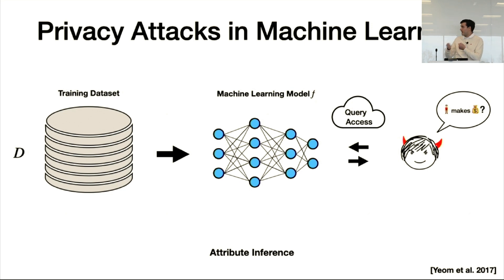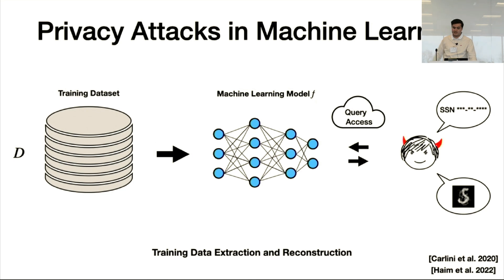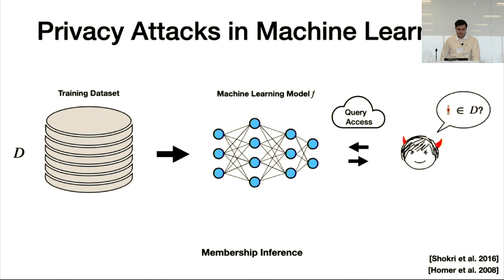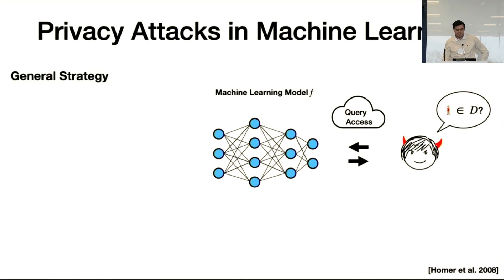There's tons of prior work in this area. One example is attribute inference attacks, where the adversary is given an incomplete feature vector and uses query access to complete the missing features. Another example is training data extraction or reconstruction attacks, where the adversary uses query access and additional knowledge to reconstruct training data samples. We'll be talking about membership inference attacks, which are a more fundamental form of privacy leakage.